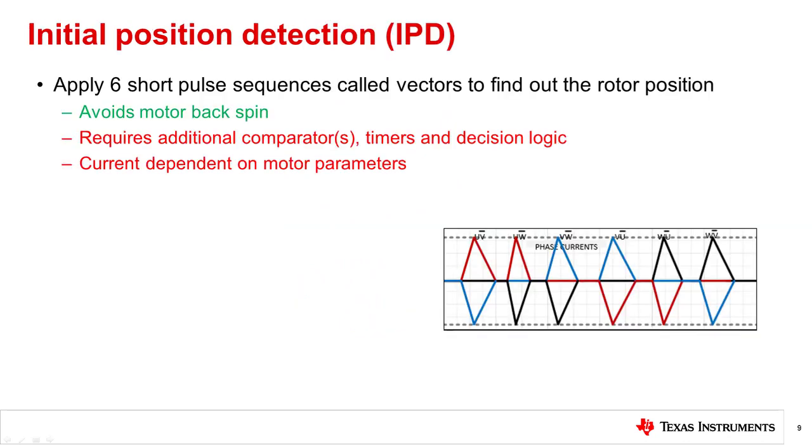Next, we'll take a closer look at initial position detection, also known as IPD. It is an algorithm that detects the position of the motor by applying current pulses on each phase and measuring the time interval for the pulse to reach a user set threshold. This is a method used to detect the motor position without moving the rotor, which is a big advantage compared to the previous two methods discussed since it eliminates the possibility of the motor spinning backwards during motor startup. However, due to its inherent complexity, this method requires additional hardware functionalities such as comparators, timers, and decision logic, so it is more resource intensive and complex to implement.